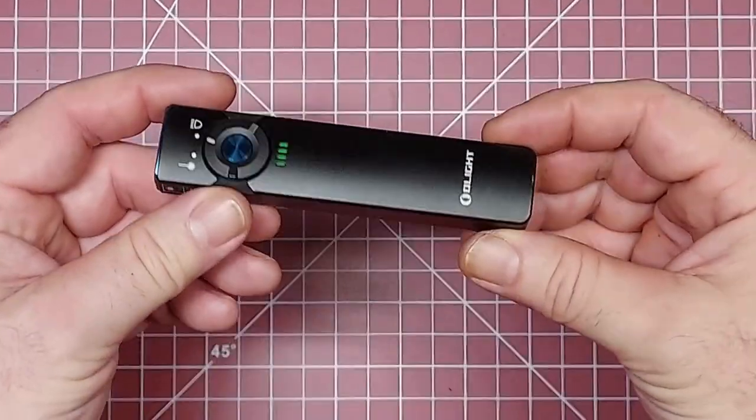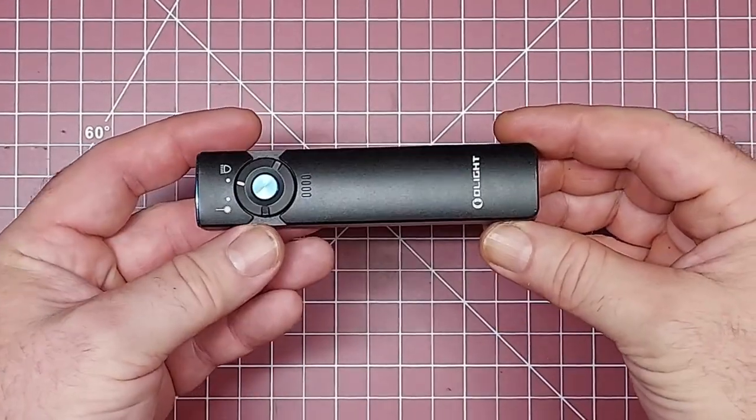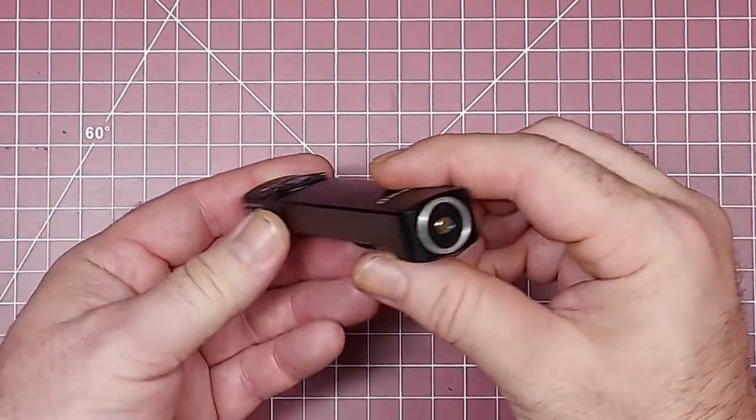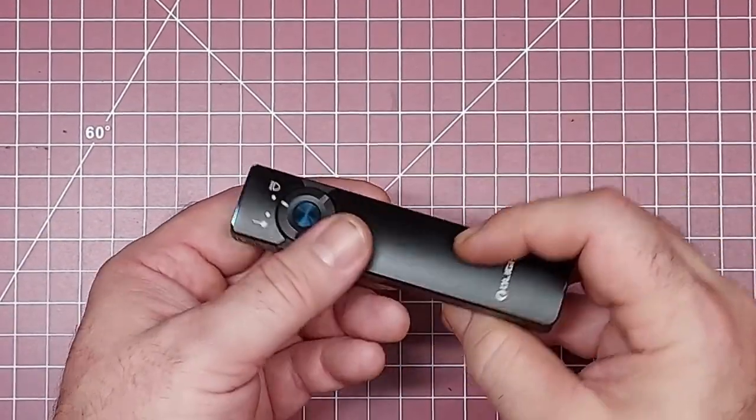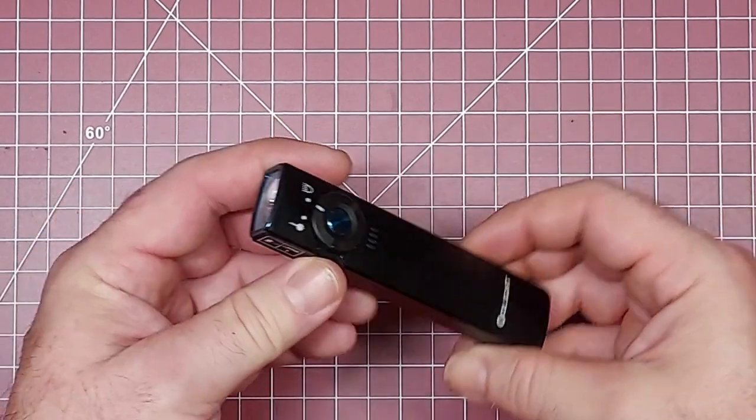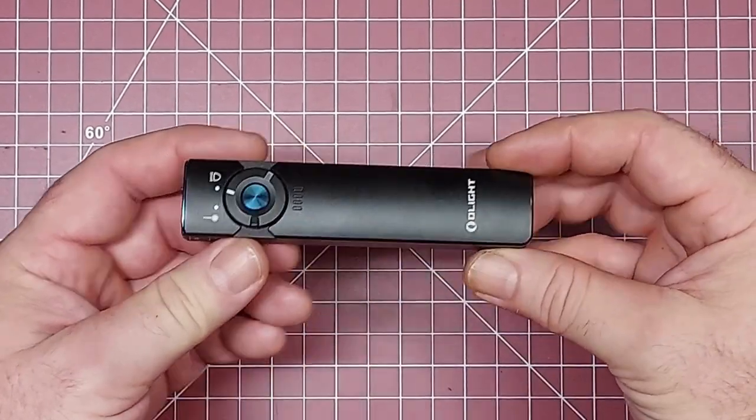These Arcfields are great. If you don't have one, pick one up. They're super slim. Nice little EDC light. Chargers on a tail cap. It's got a lot of features. And they are super bright on the turbo setting.